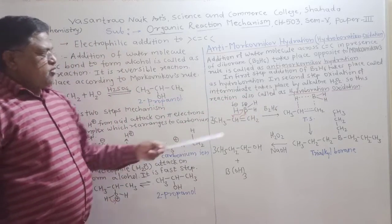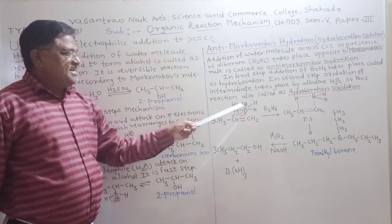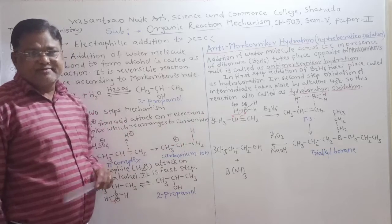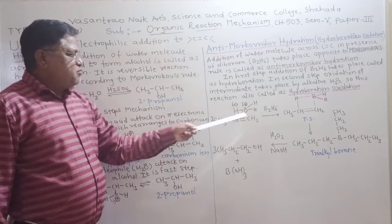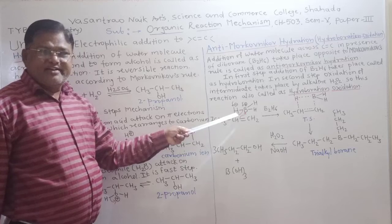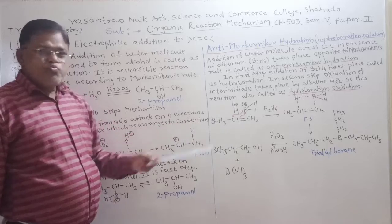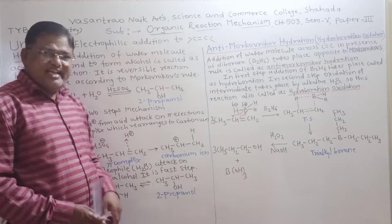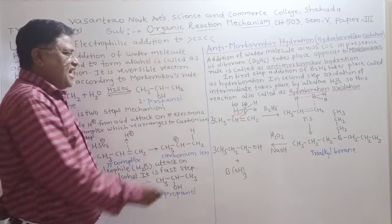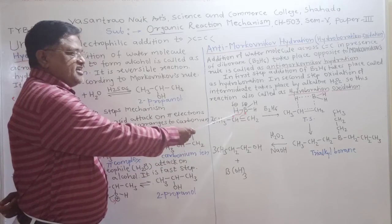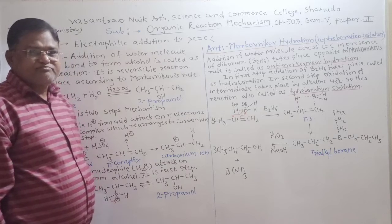Now, this B2H6 is a dimer and BH3 is its monomer. In case of BH3, the B-H bond is a polar bond. In this polar bond, boron is metal, it is always electron deficient, so it is denoted by partial positive charge. And hydrogen atom which is electron rich, it is denoted by partial negative charge.